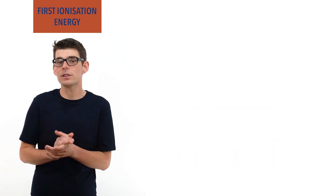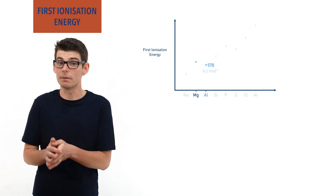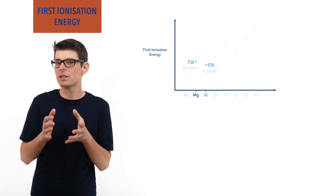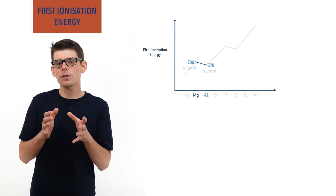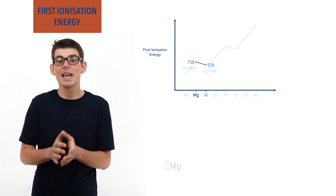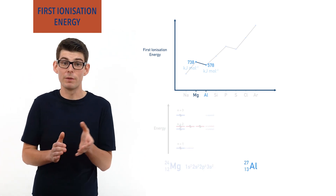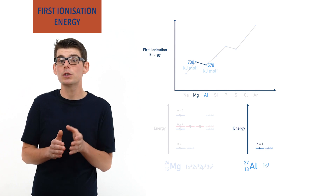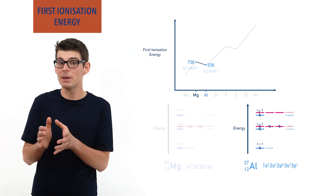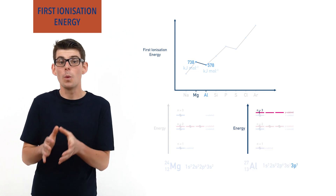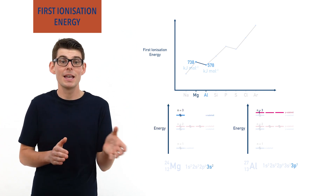For example, comparing aluminium to magnesium, there is a surprising drop from group 2 to group 3. The electron configuration for magnesium with its 12 electrons is 1s², 2s², 2p⁶, 3s², whereas for aluminium with its 13 electrons it is 1s², 2s², 2p⁶, 3s², 3p¹. The added electron for aluminium goes into the 3p subshell, which is higher in energy than the 3s subshell the outermost electron in magnesium exists in.